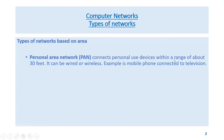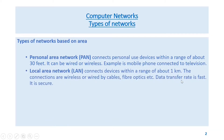Types of networks based on area: Personal Area Network (PAN) connects personal-use devices within a range of about 30 feet. It can be wired or wireless. An example is a mobile phone connected to a television. Local Area Network (LAN) connects devices within a range of about one kilometer.